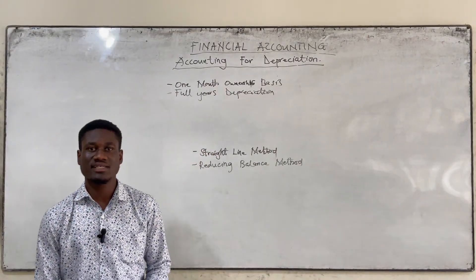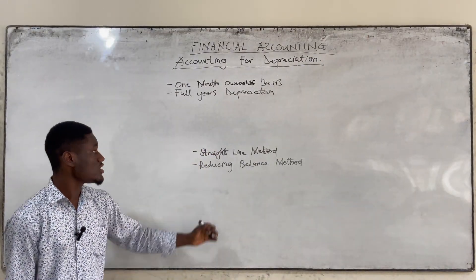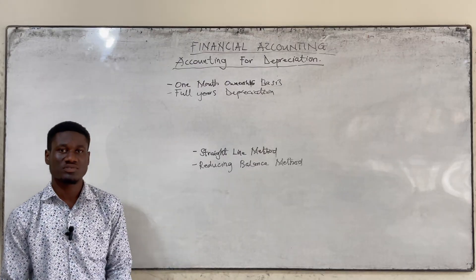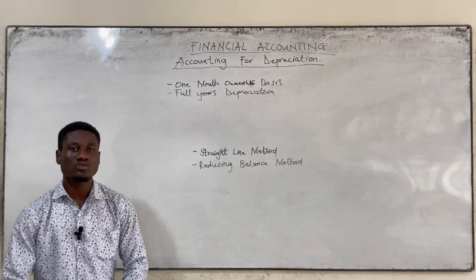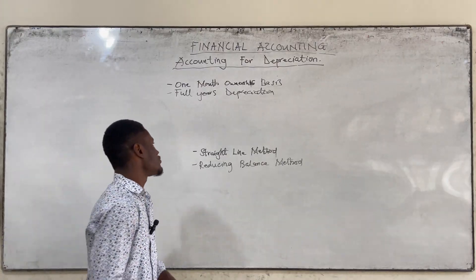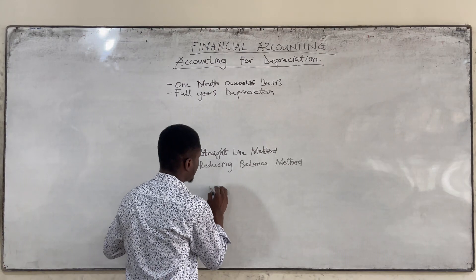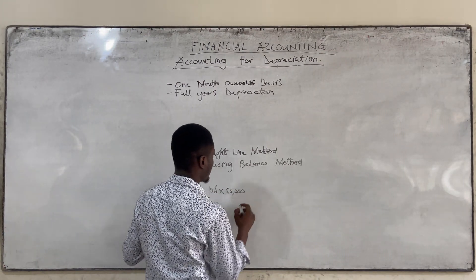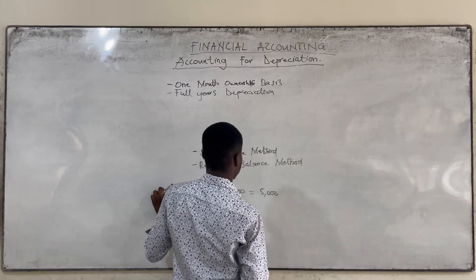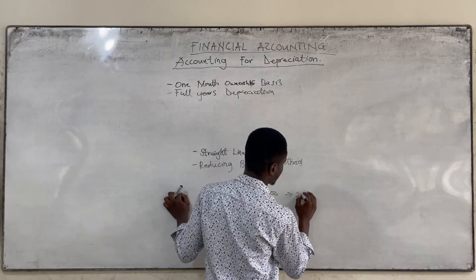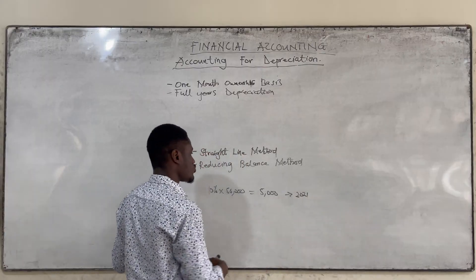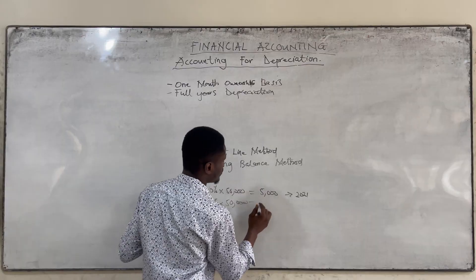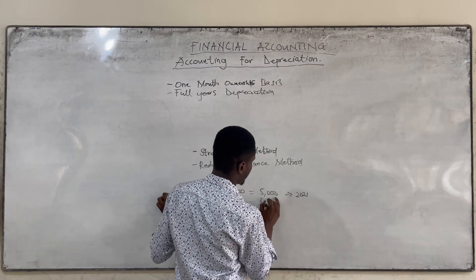Let's say in 2019 we had a depreciation of 10,000 for the asset. For 2020 we are going to still get the same 10,000 for depreciation. 2021, you are still going to get that 10,000. So if our percentage was 10% and our cost was 50,000, we are getting 5,000. When we come to 2022, it's still going to be the same depreciation — that is the 5,000. That's what the straight line method is about.